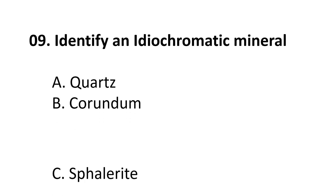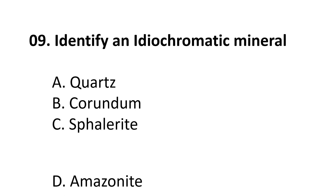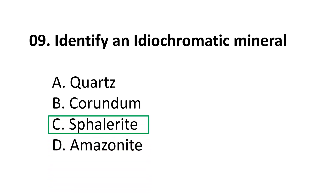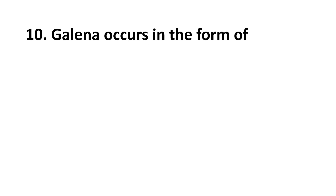Question 9: Identify an idiochromatic mineral — A. quartz, B. corundum, C. spessartite, D. amazonite. The correct answer is C, spessartite. Quartz, corundum, and amazonite are allochromatic minerals, whereas spessartite is an idiochromatic mineral.